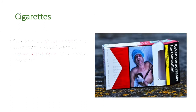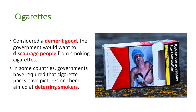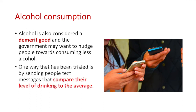Considered a demerit good, the government would want to discourage people from smoking cigarettes. In some countries, governments have required that cigarette packs have pictures on them aimed at deterring smokers. Alcohol is also considered a demerit good and the government may want to nudge people towards consuming less alcohol. One way that has been trialled is by sending people text messages that compare their level of drinking to the average. A significant number of heavy drinkers underestimate the amount they drink, and this nudge could discourage them from consuming as much.